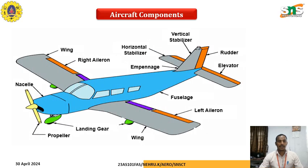These are the primary and secondary control surfaces of the aircraft, including aileron, elevator, and rudder. The right side of the wing is called the starboard wing and the left side is the port side wing. To roll the aircraft, we use the ailerons — if the right aileron goes up, the left aileron goes down, making the aircraft roll to the right.